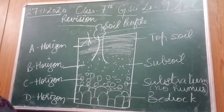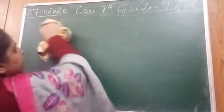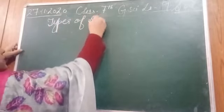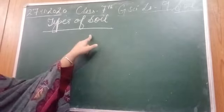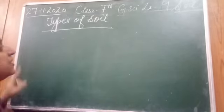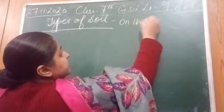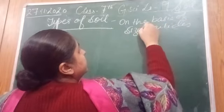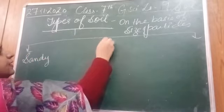Hope the soil profile is clear to all. Now we are going to start with types of soil. We will cover different properties of soil tomorrow. There are basically three types of soil given in the book. Soil is categorized on the basis of the size of rock particles — on the basis of particle size, there are three types: sandy soil, clay soil, and loamy soil.